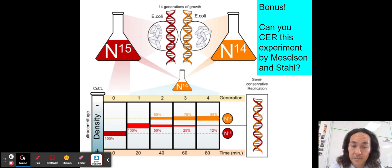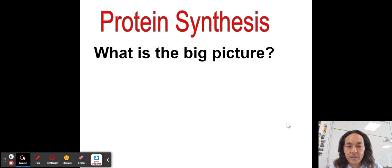Here's a bonus question. This is often called the most beautiful experiment in biology by Meselson and Stahl. Could you claim evidence reason this one? I am not going to put the answer in the video. This is kind of for you and see if you can figure it out. It's pretty cool. That is replication. So now we know how we can make a lot of copies of DNA. Well, now remember that we talked about DNA making proteins or coding for proteins. And so can you tell me the big picture of protein synthesis?